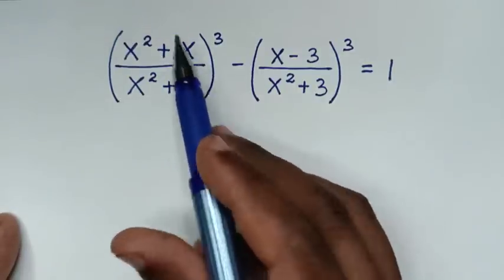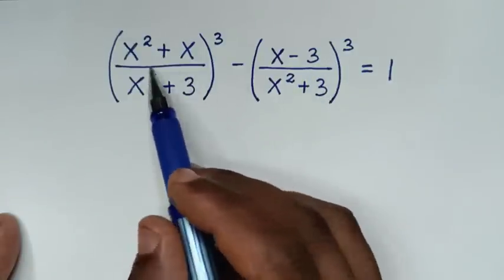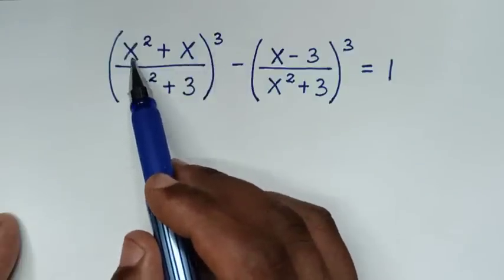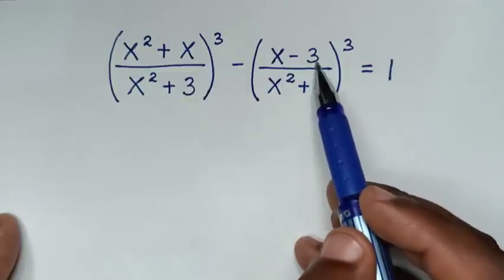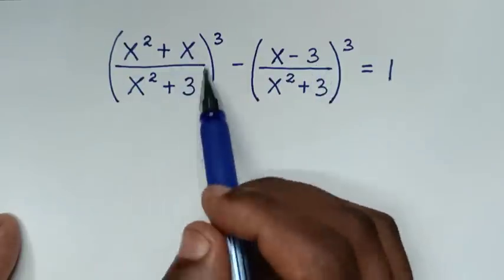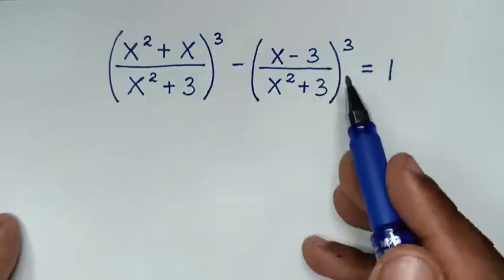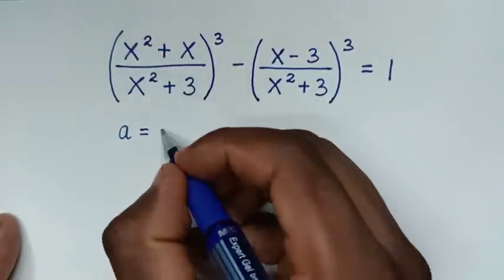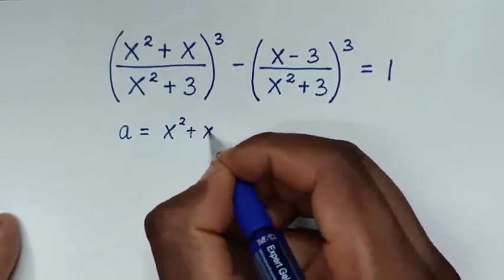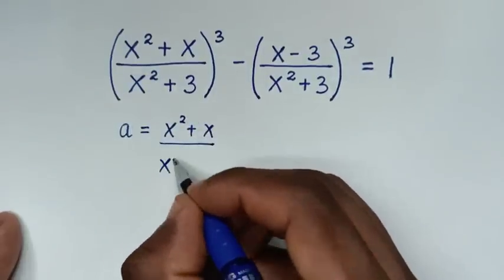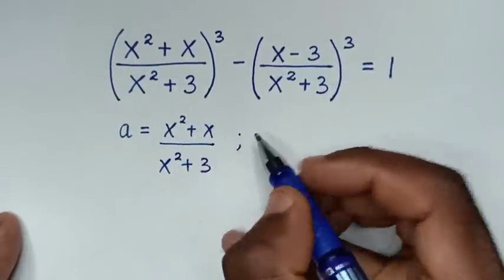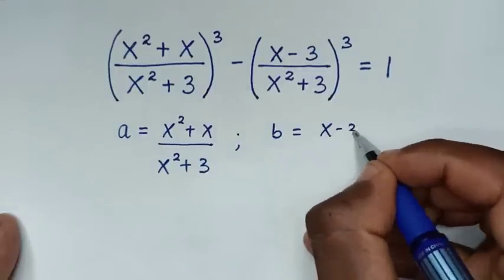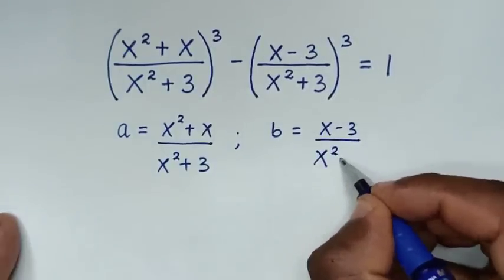Now, inside the denominator brackets it is the same x² + 3, but in the numerator they are different. Here we have x² + x, and here we have x - 3. So this inside this bracket is different from this. We let a = (x² + x)/(x² + 3) and b = (x - 3)/(x² + 3).